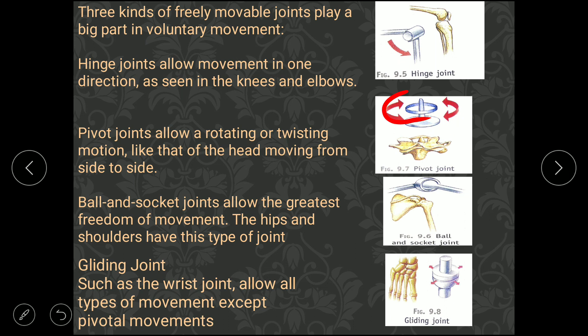The ball and socket joint allows the greatest freedom of movement — left, right, up, down, and in a circle. It is found in the hip bone and shoulder bone. The gliding joint is found in the wrist and can move in all directions except a full pivotal circular movement.